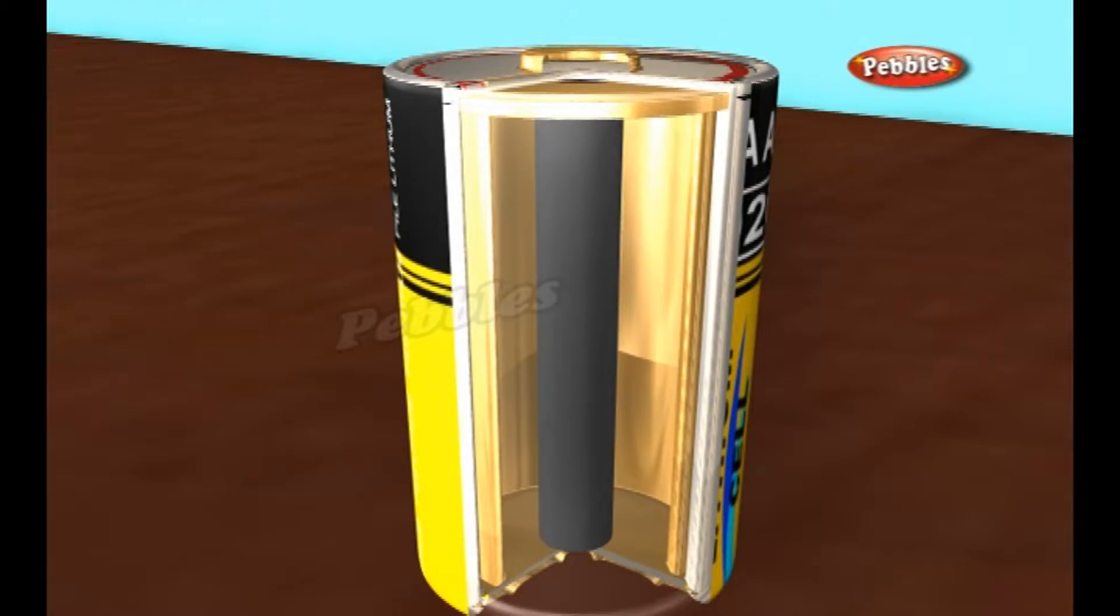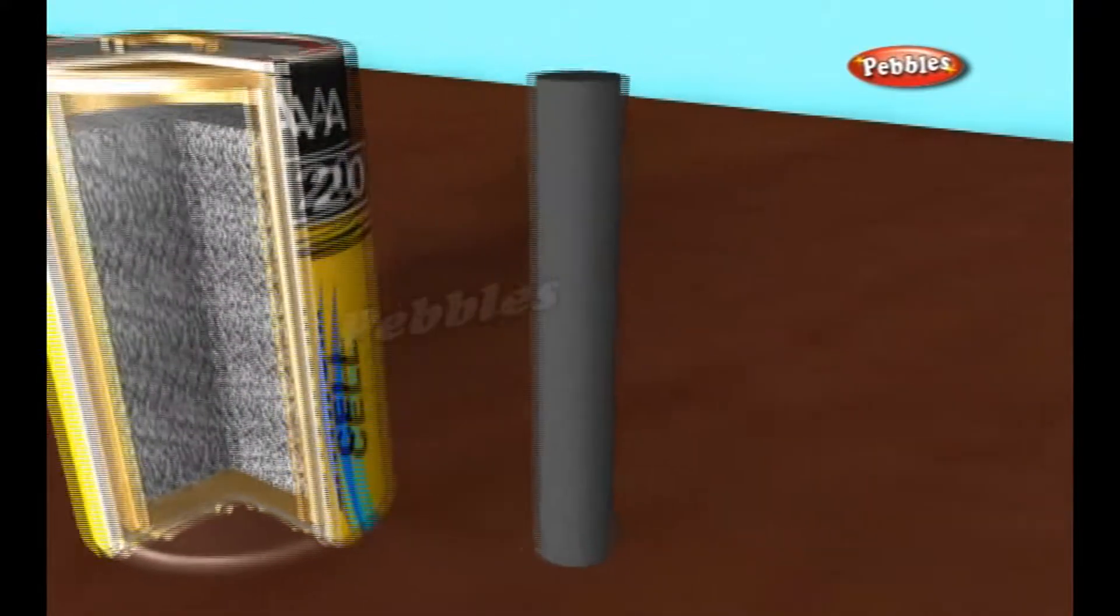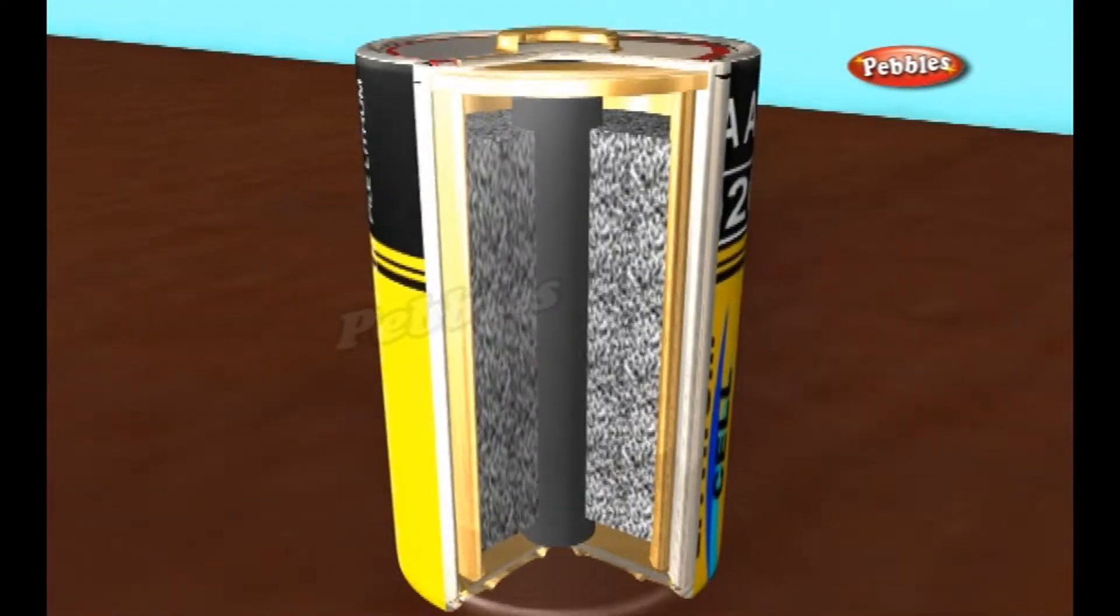The space between the carbon rod and the zinc contains a paste of ammonium chloride and zinc chloride. The cathode is a mixture of manganese dioxide and carbon powder. Electricity is the flow of electrons through a circuit or conductive path like a wire.